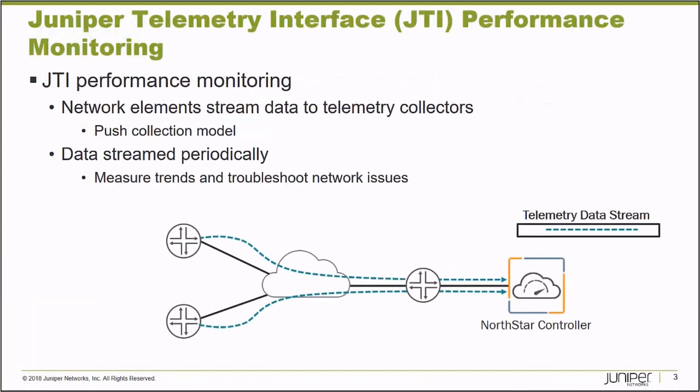Junos platforms support the streaming of real-time telemetry data toward a data collector. In this case, the Northstar Controller is capable of receiving physical interface statistics, logical interface statistics, and statistics about the label switch paths that are used for forwarding across your network. The Northstar Controller supports collecting that data, storing it, and providing it to you to view inside of the Northstar Controller Administrative Interface.